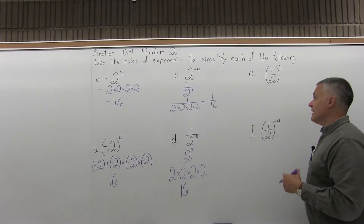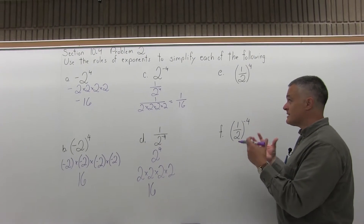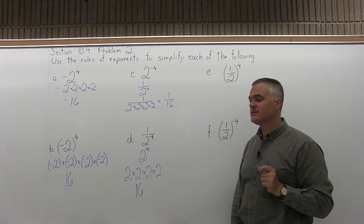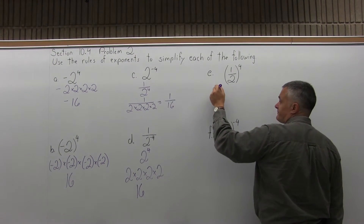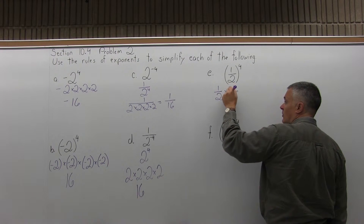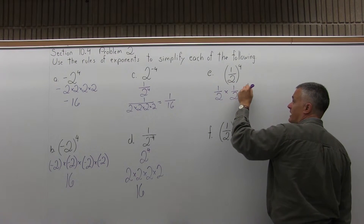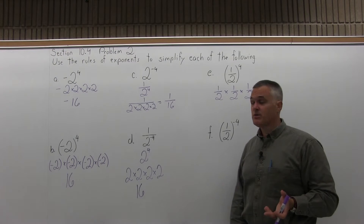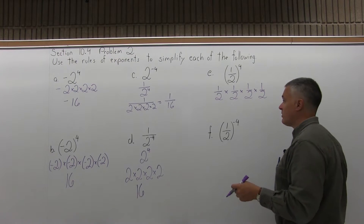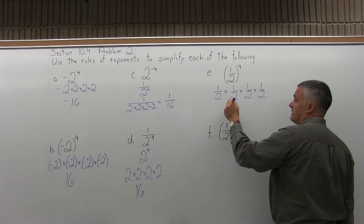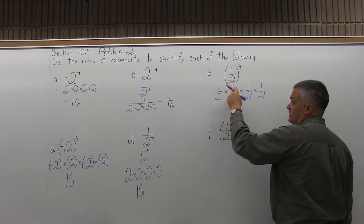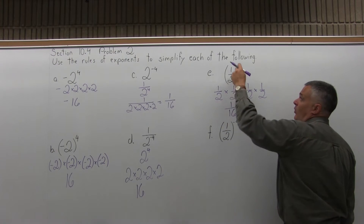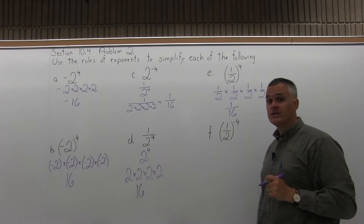Part E: you have 1 half to the fourth power. It looks tough because it's a fraction, but it's really 1 half times itself four times: 1 half times 1 half times 1 half times 1 half. When you multiply fractions, you multiply top times top and bottom times bottom. Across the top: 1 times 1 times 1 times 1 is 1. The bottom: 2 times 2 is 4, times 2 is 8, times 2 is 16. So 1 half to the fourth power equals 1 sixteenth.